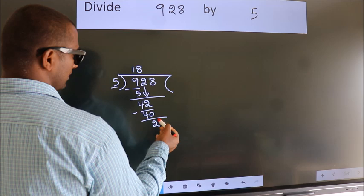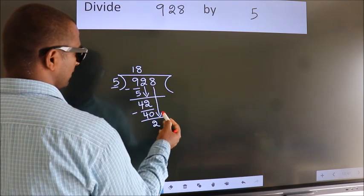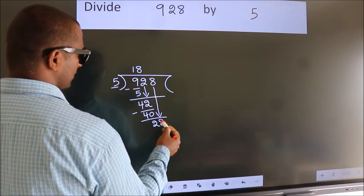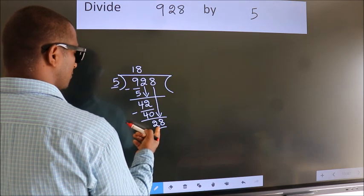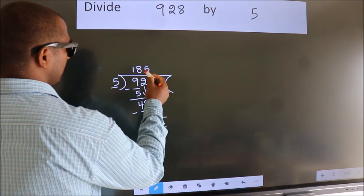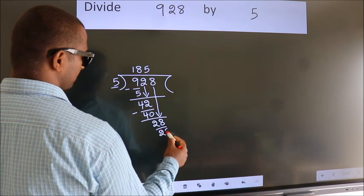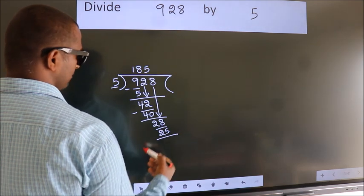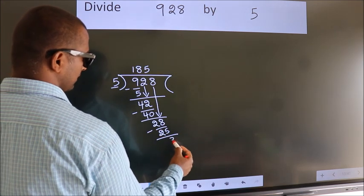After this, bring down the beside number. So 8 down. So 28. A number close to 28 in 5 table is 5 5s 25. Now we subtract. We get 3.